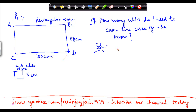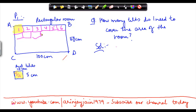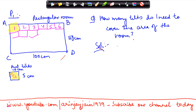There are two things that can happen here. Either I can pick up a tile and start putting it one by one — one tile, then a second tile, third tile, fourth tile, fifth tile, sixth tile, then start putting in the second layer and so on. However, this is one of the most inefficient ways of doing this.